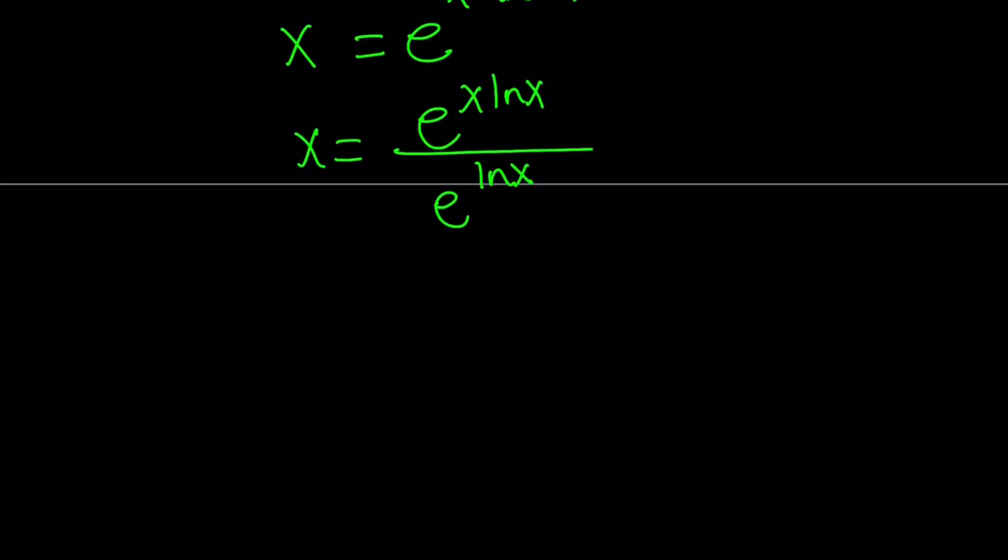Now, we've got some nice things here. What is it? It is e to the power ln x, which is at the bottom. And that means something. By definition, e to the power ln x is the same thing as x. Of course, we want x to be positive, needless to say, in order for this to be well-defined.